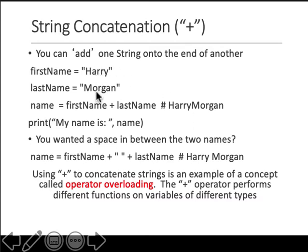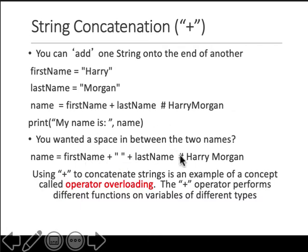Whatever you tell the computer, it will do that. If you want Harry space Morgan as the name, you have to explicitly provide the space in your concatenation statement. You write first name, which is Harry, plus a single space inside quotes, plus the last name, which is Morgan. When you print this, you will see Harry space Morgan, which is the correct way.